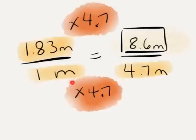If I recognize that the relationship between my shadow and the tree's shadow is impacted by a scaling factor of 4.7, I can use that same scaling factor on my height to get the tree's height.